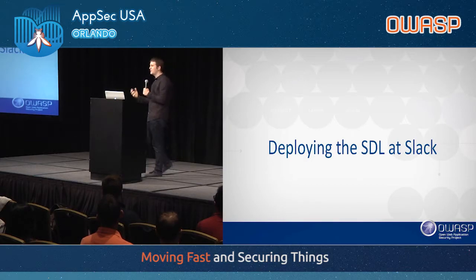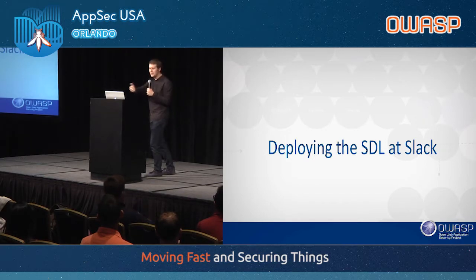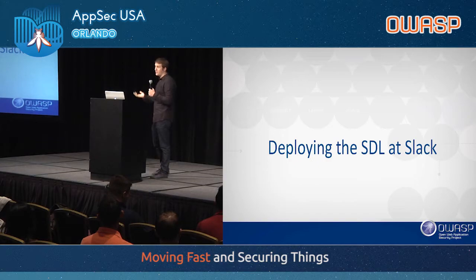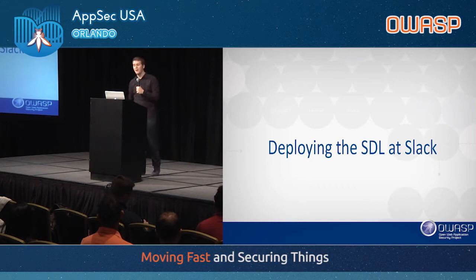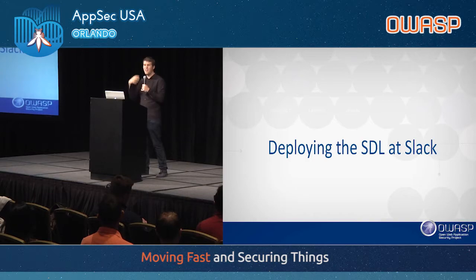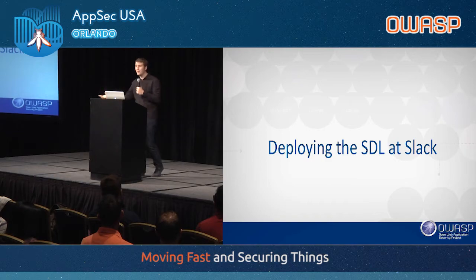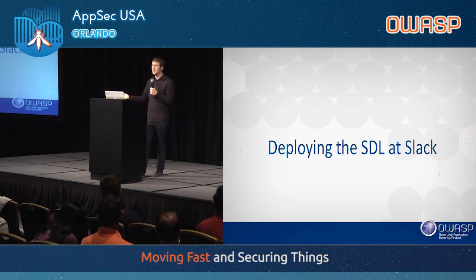To deploy the SDL at Slack, we had a lot of work to do. We'll talk about lessons learned, but we've been deploying it and continue to build and improve it. When we first started, it was a lot of work with not enough time and not enough resources. We deploy code multiple times per day; our company is very fast. A waterfall SDL doesn't totally work in our process. So what do we do?